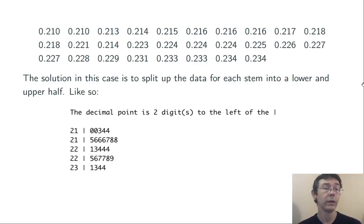So the stem 21 has now been split into two pieces. The first one has 210 through 214, and the second one has 215 through 218. And so this resolves the previous difficulty.